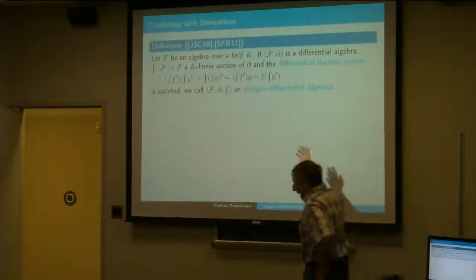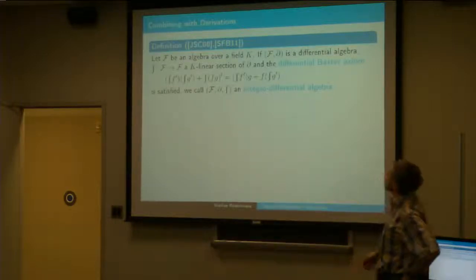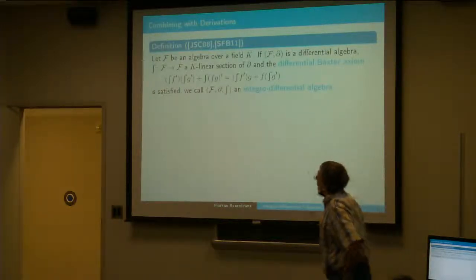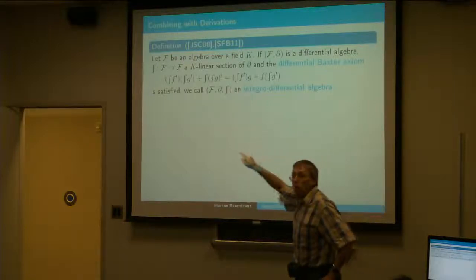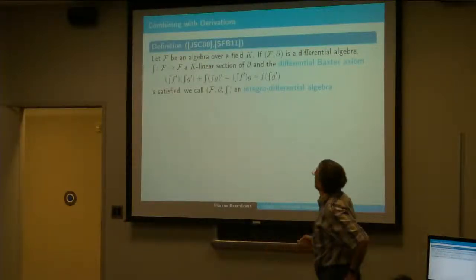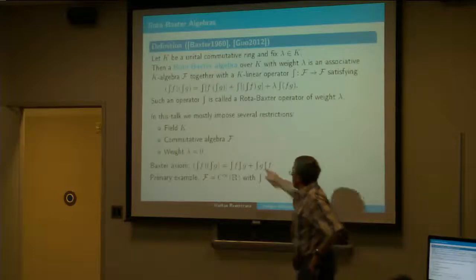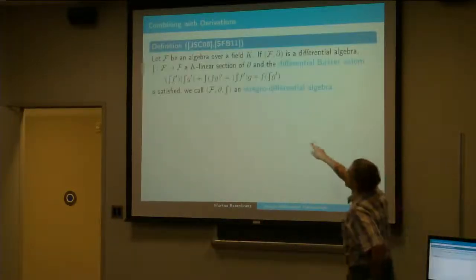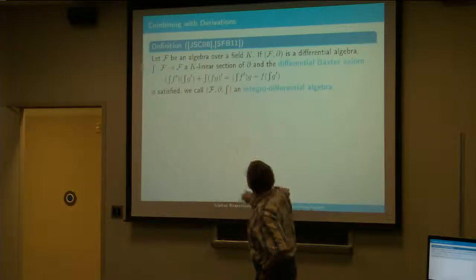So now I want to combine this with the differential structure because for boundary problems we have a differential equation and boundary conditions and Green's operators, which are integrals. So I'm assuming now a richer structure that contains a differential algebra over K and I add this Rota-Baxter operator, which goes from F to F. It's again K-linear. It's a section — a right inverse. So derivation composed with the integral operator is the identity operator, but not vice versa. The integral is only a right-sided inverse. And instead of the Rota-Baxter axiom before, I'm introducing a hybrid version — the differential Rota-Baxter axiom — which does involve the derivation. It's an interesting question how these are related.